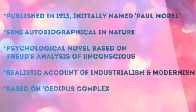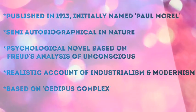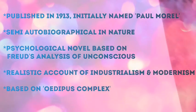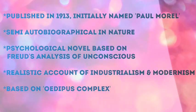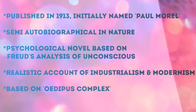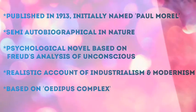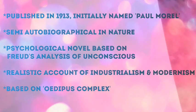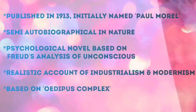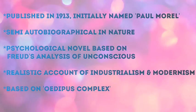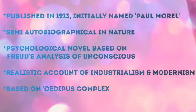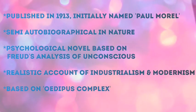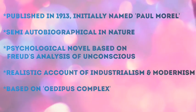Mrs. اور Mr. Morel کی opposite nature کی وجہ سے ان کے رشتے میں دوریاں آ گئیں اور Mrs. Morel نے اپنا سارا attention اور پیار اپنے سب سے بڑے بیٹے William پر focus کر لیا۔ William اپنی ماں کو بہت اچھے سے سمجھتا تھا اور اسے ایک victim سمجھتا تھا جو باپ کے ظلم کا شکار ہے، اور بڑا ہو کر اس کے خلاف کھڑا بھی ہوتا ہے۔ William اور اس کی ماں کے بیچ ایک Oedipal bond develop ہو جاتا ہے۔